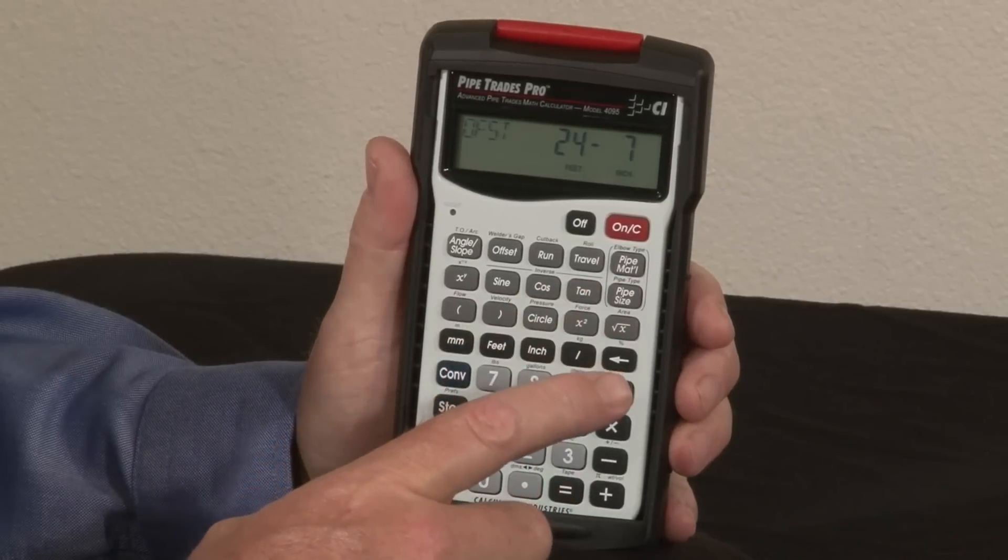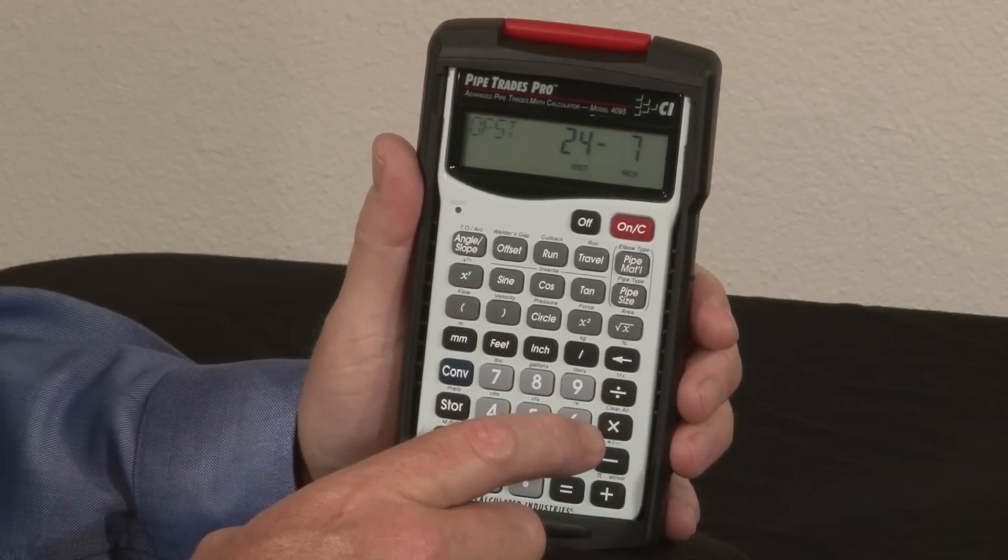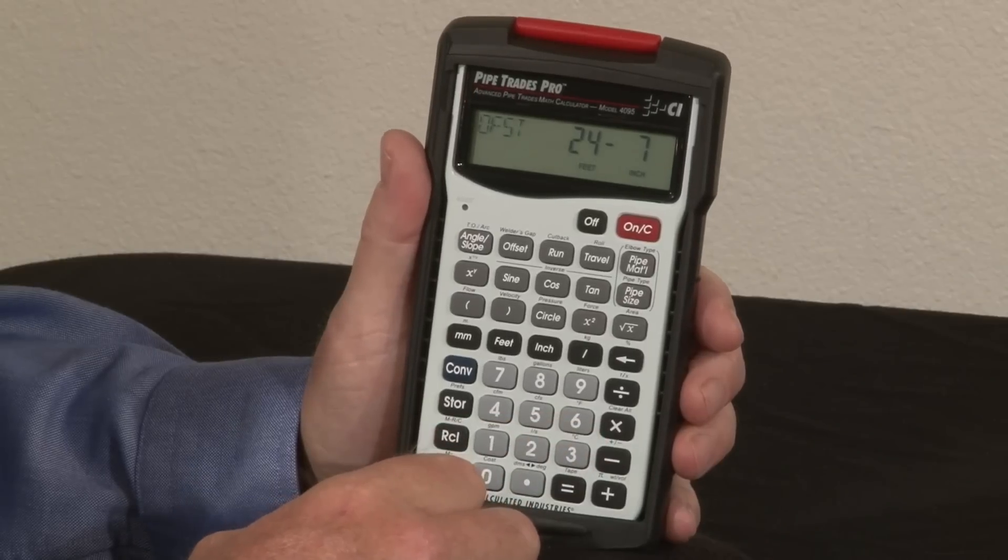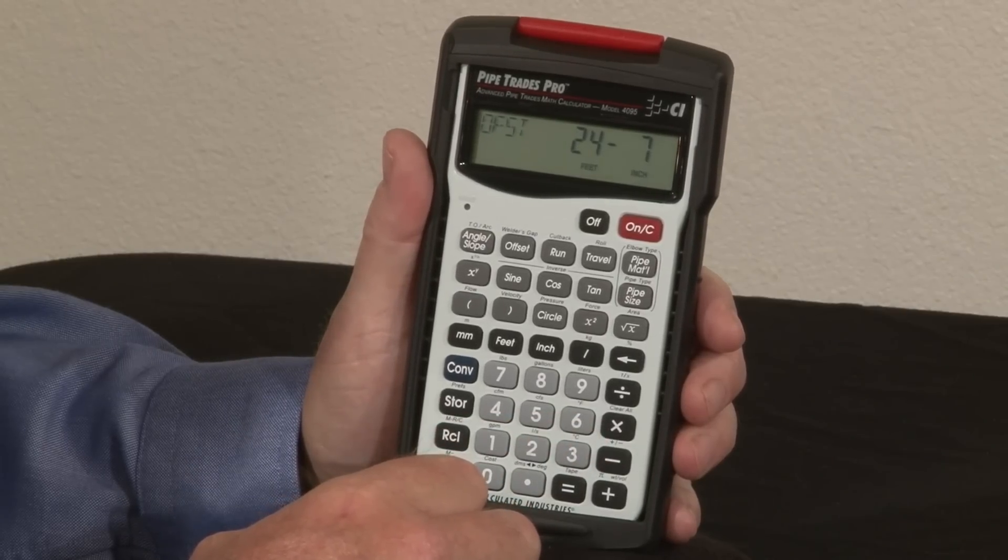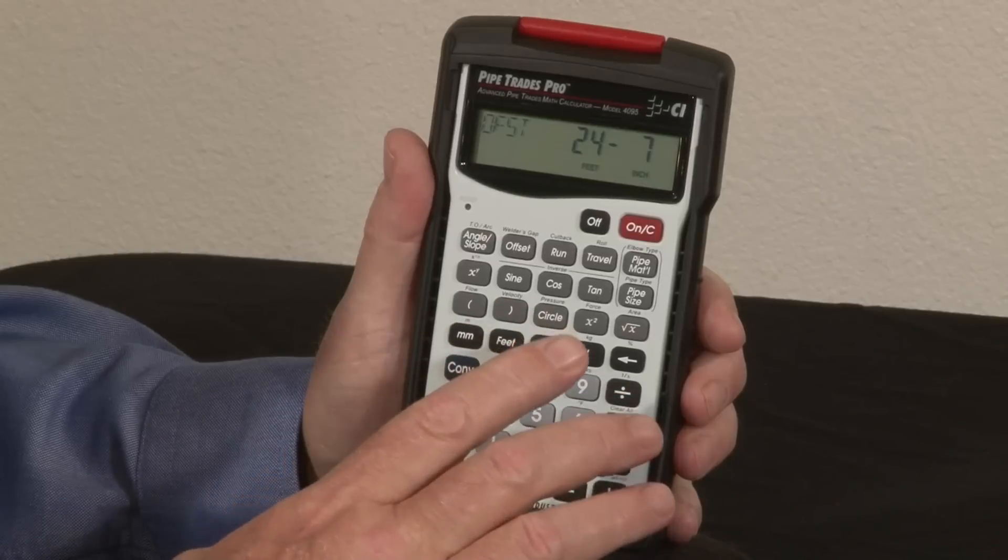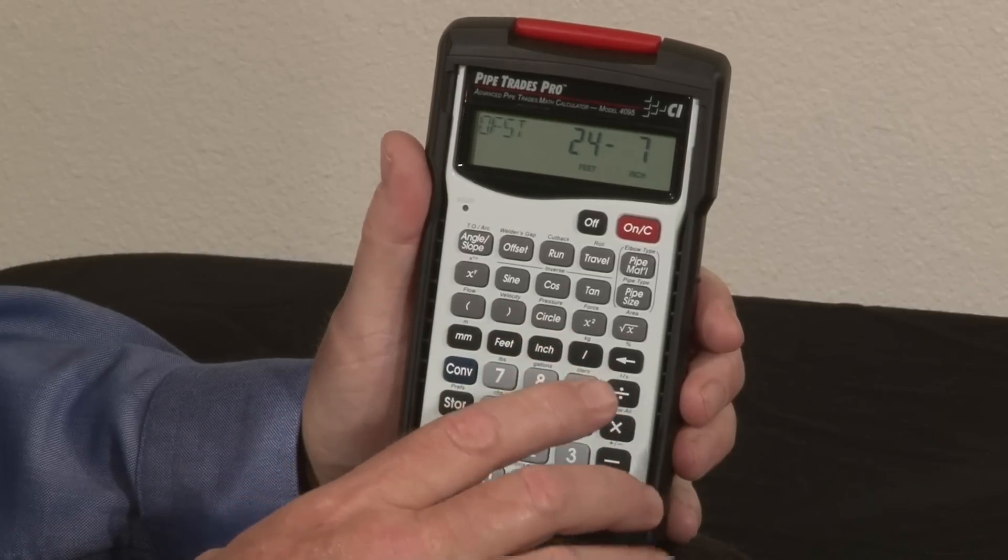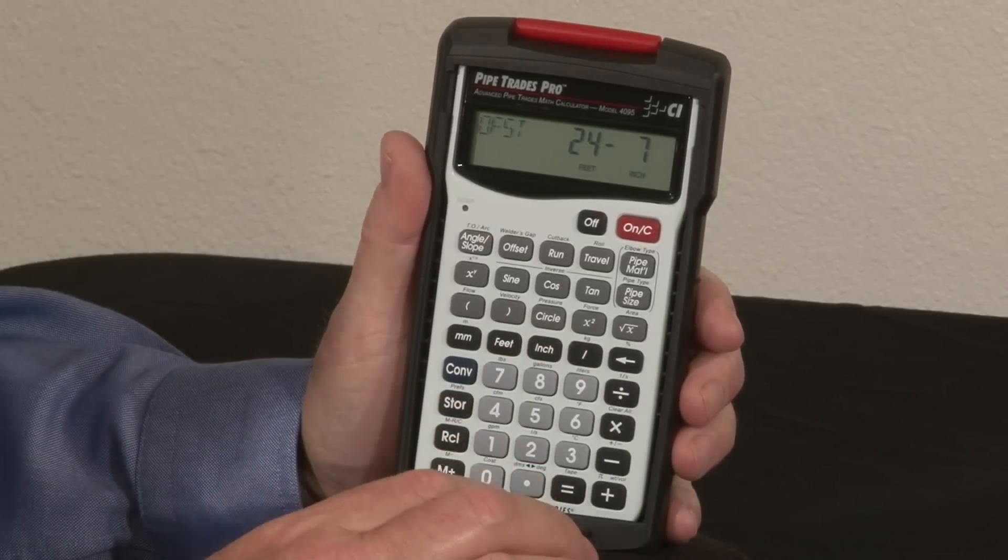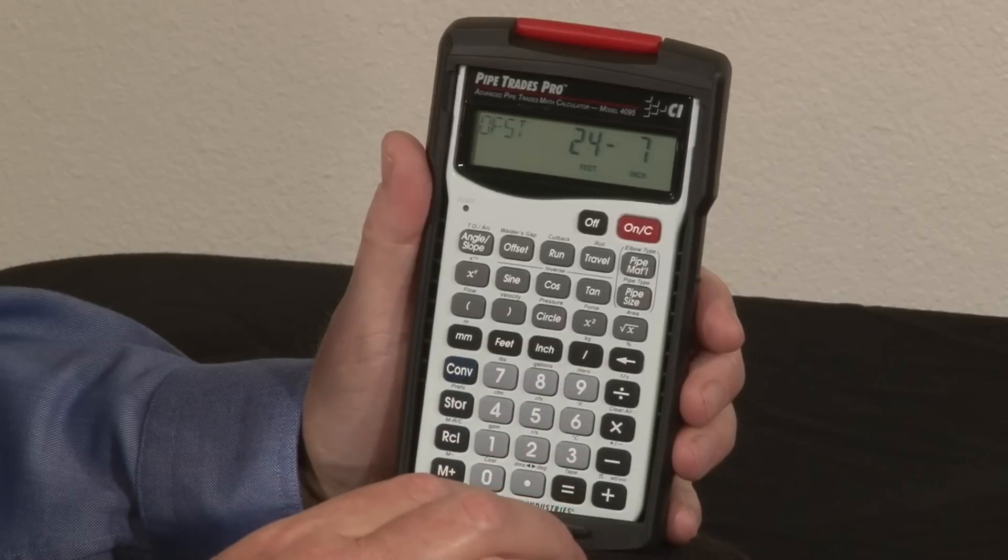In the calculator there are built-in material tables for seven different kinds of materials from steel and stainless steel to PVC and copper. And within each pipe material you can find pipe types, all the different schedules for each of the material types. You can also enter pipe sizes.